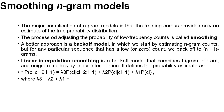The complete process of adjusting the probability of low-frequency counts is called smoothing. The simplest type of smoothing was suggested by Pierre-Simon Laplace in the 18th century. He said that if a random Boolean variable x has been false in all n observations so far, then the estimate for P(x=true) should be 1/(n+2) — assuming that with two more trials, one might be true and one false. Laplace smoothing is a step in the right direction but performs relatively poorly. A better approach is a back-off model, in which we start by estimating n-gram counts, but for any particular sequence with a low or zero count, we back off to (n-1)-gram counts.